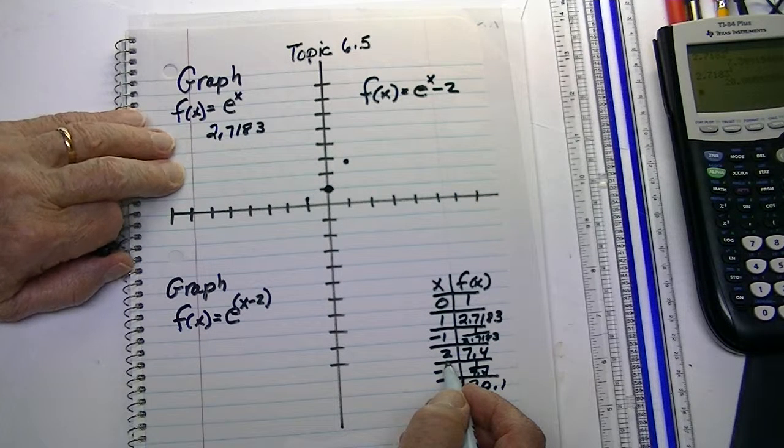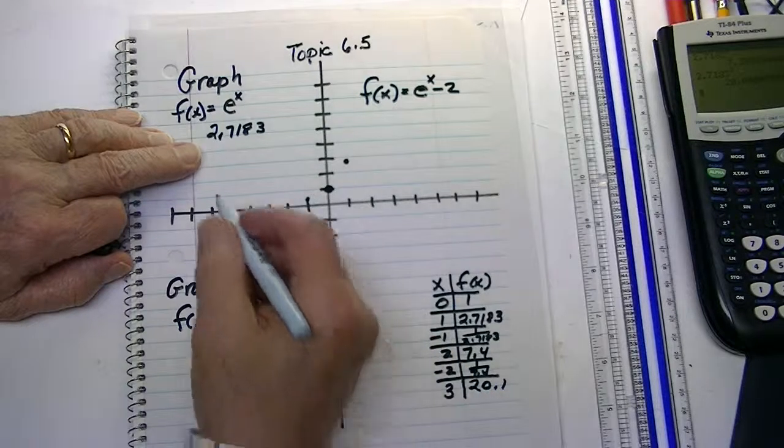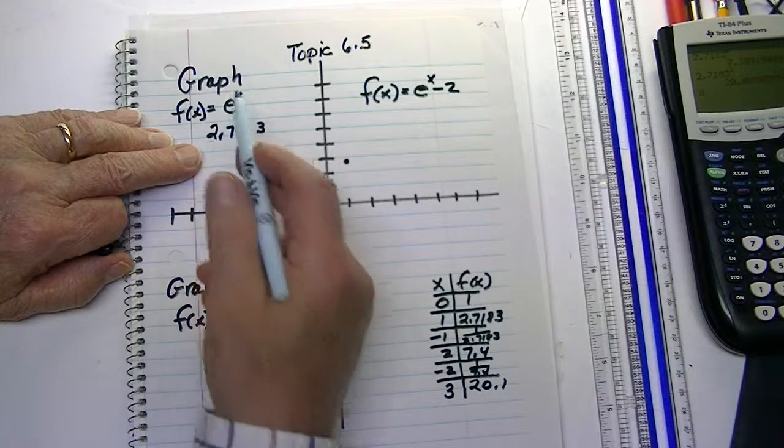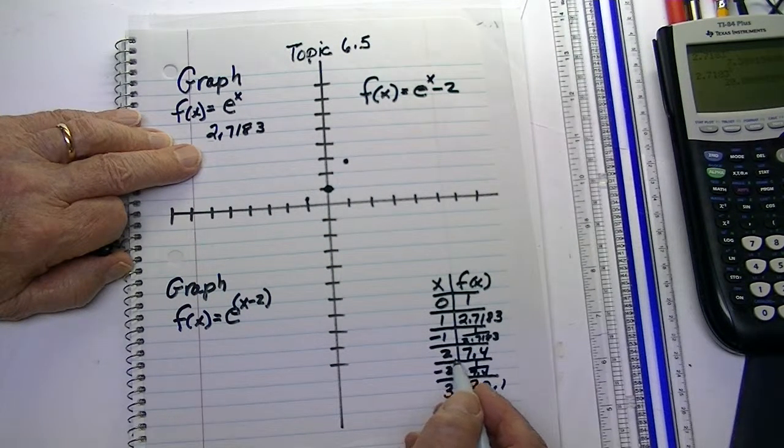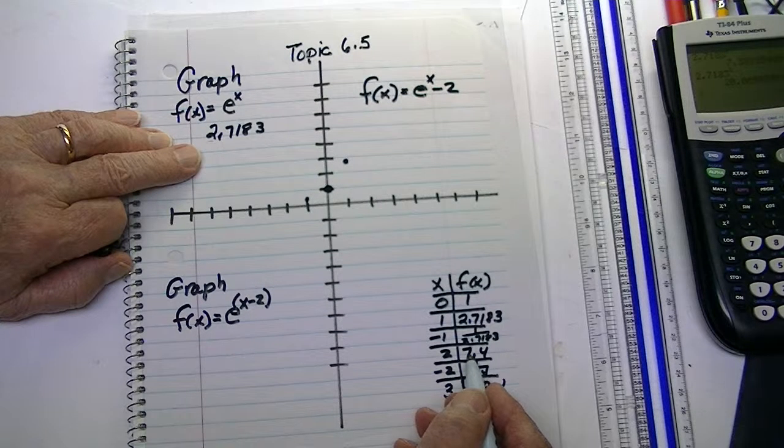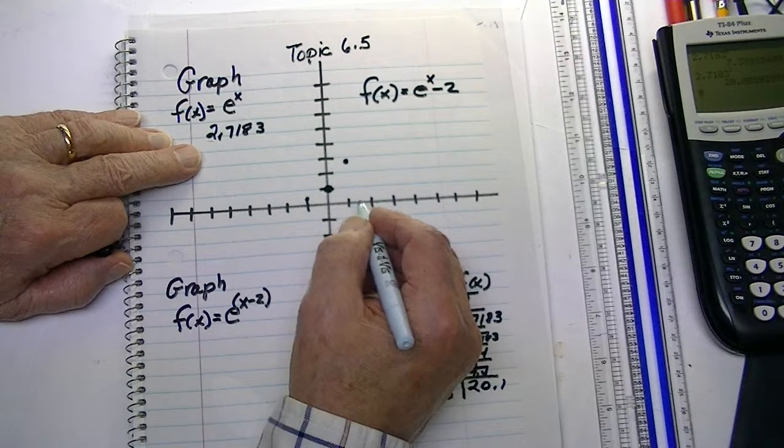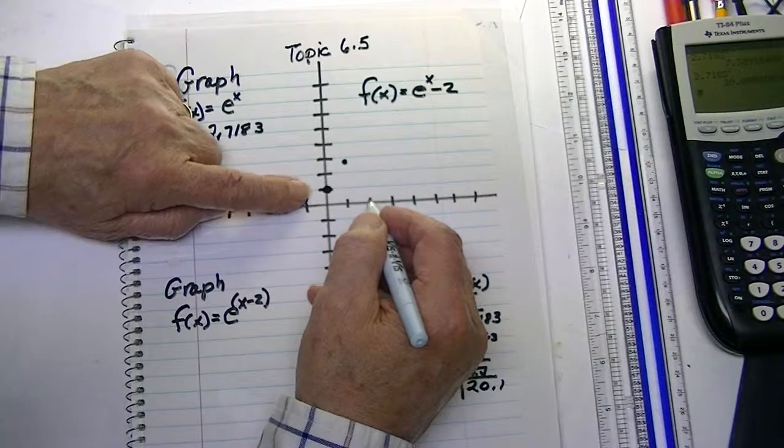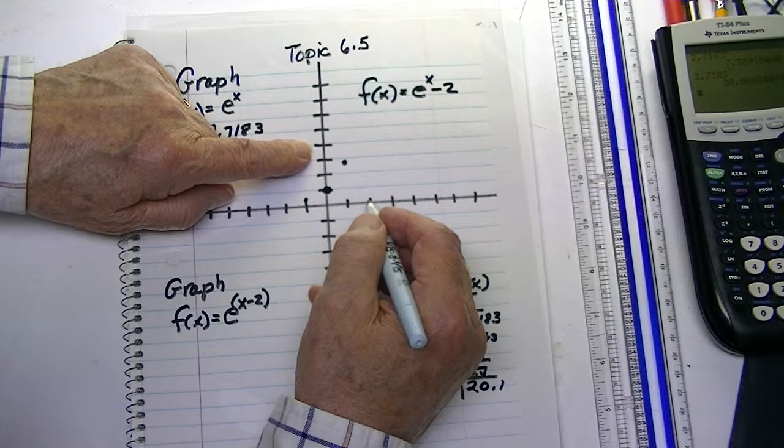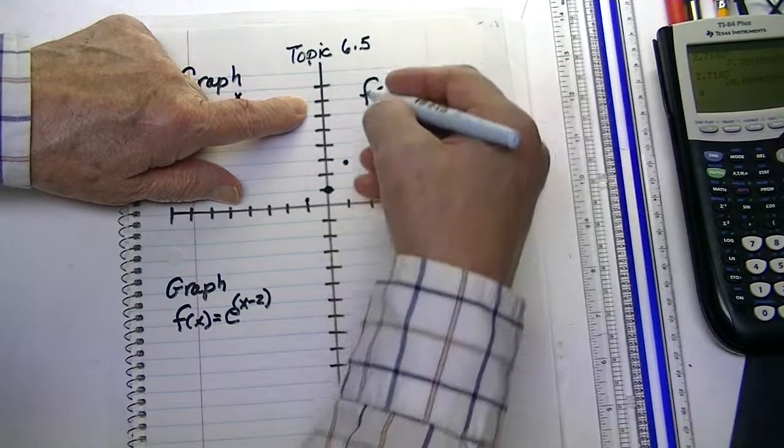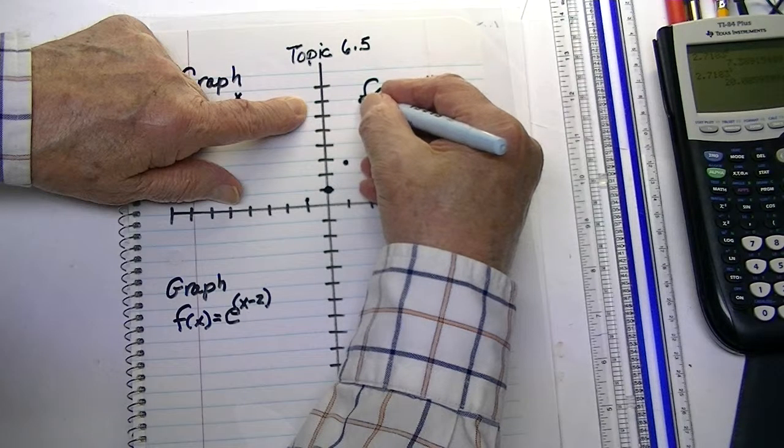Now, if x is 2, if you raise this to the second power, that is, we square it, it's approximately 7.4. So, there's 2. 1, 2, 3, 4, 5, 6, 7. It's going to be about there.